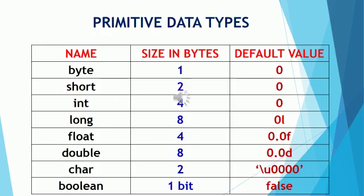Let's have a look at these primitive data types. The table will show you the name of the data type along with the size they occupy in memory, and the default values stored in these data types when no other value is given. First is byte, which occupies one byte in memory. Then short, which occupies two bytes. Int, which occupies four bytes. And long, which occupies eight bytes in memory. These byte, short, int and long data types are used for storing integer numbers.